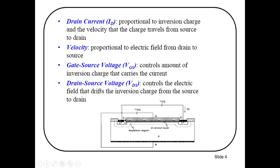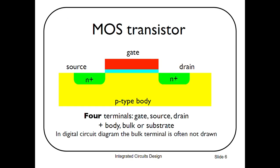Here you can see VGS: this is your gate terminal, this is the source terminal, and this is the drain terminal. There is N-type diffusion at the drain and source terminals because this is an N-channel transistor with a P-type body. This gate-source voltage VGS controls the amount of inversion charge that carries the current. Your VDS, between the drain terminal and the source terminal, controls the electric field that drifts the inversion charge from source to drain.